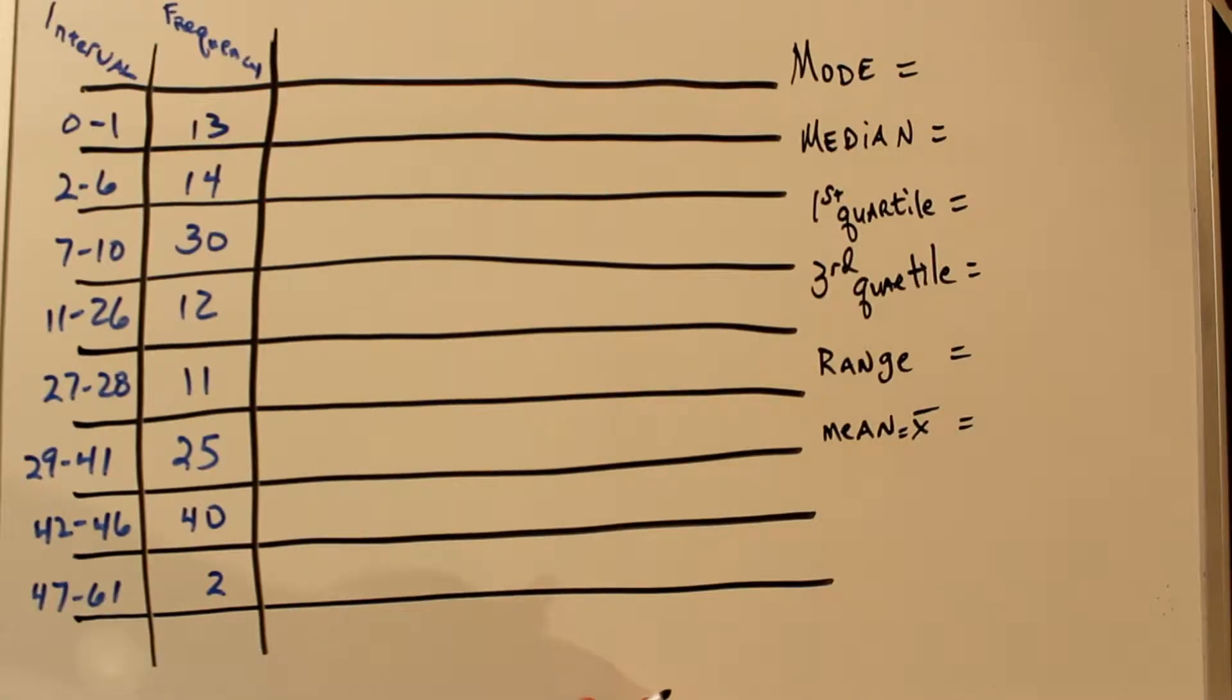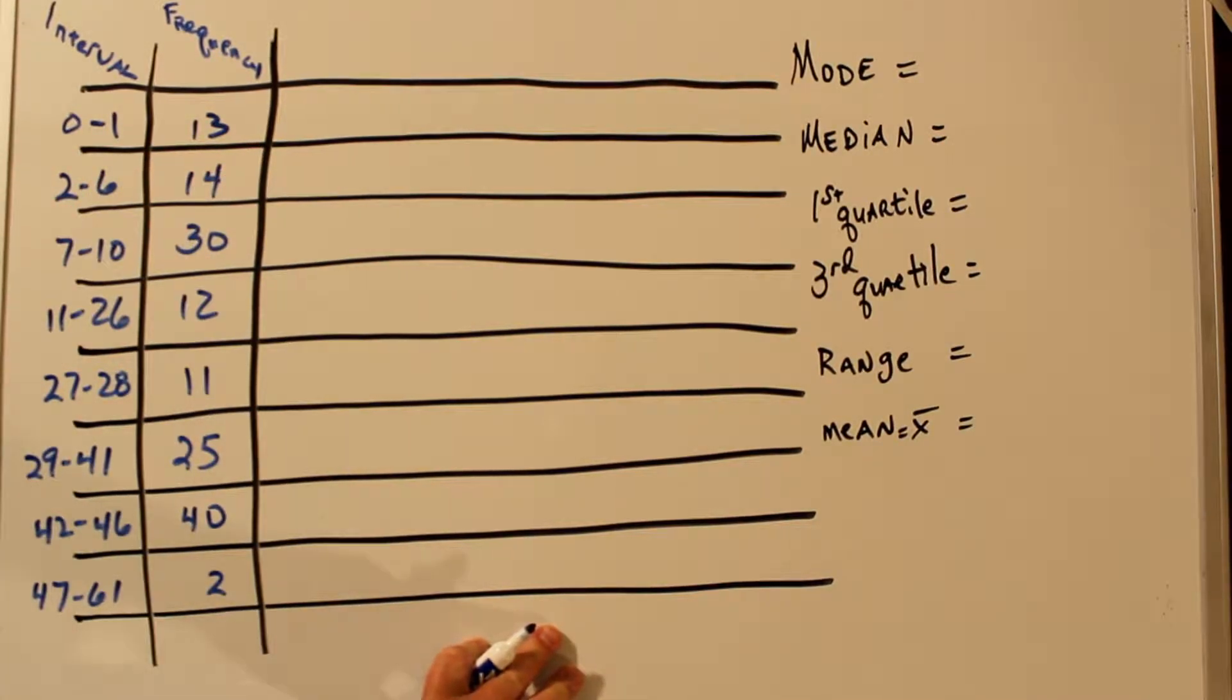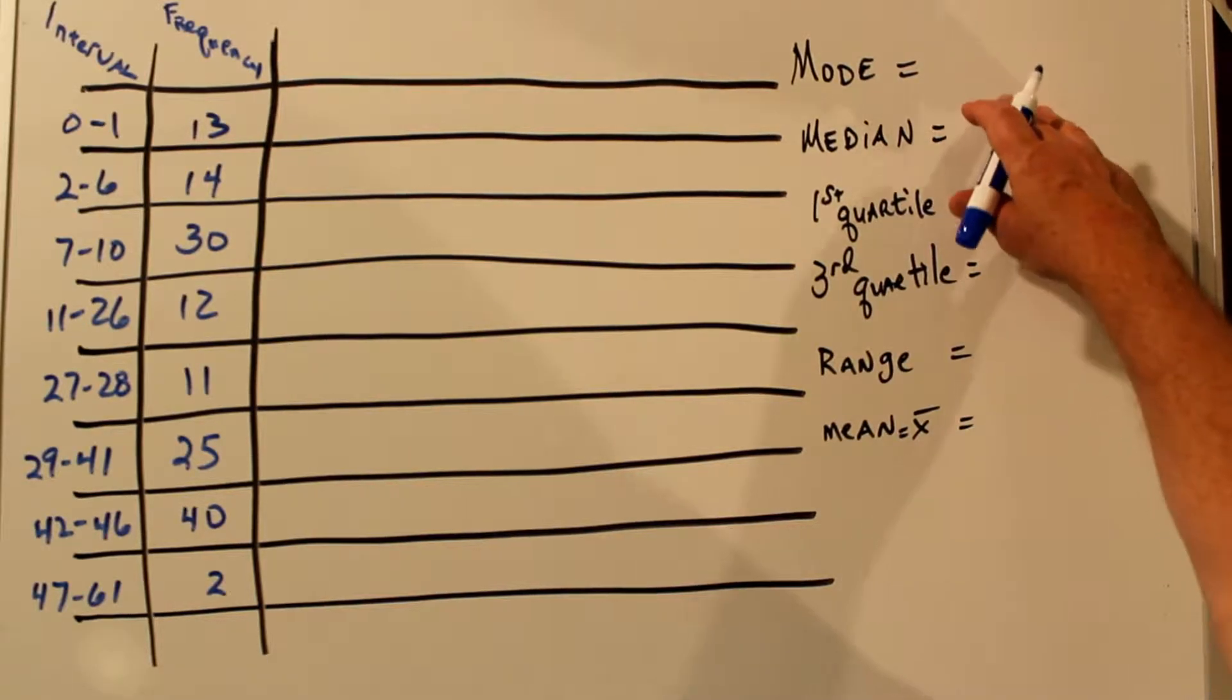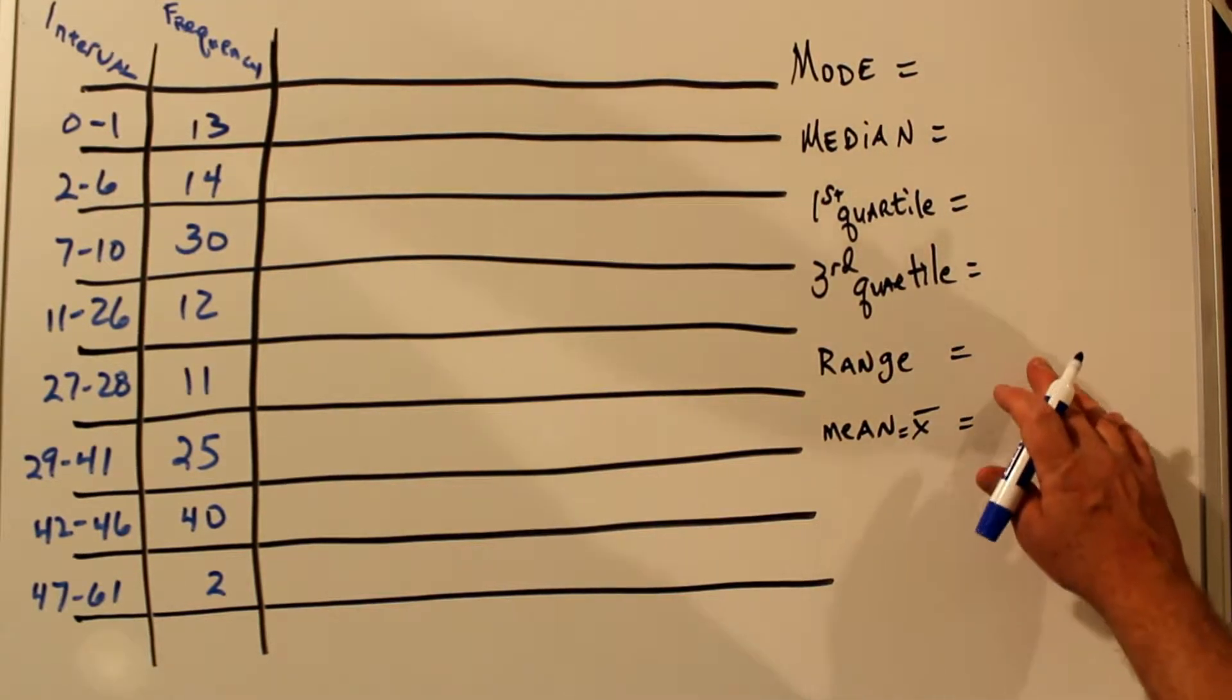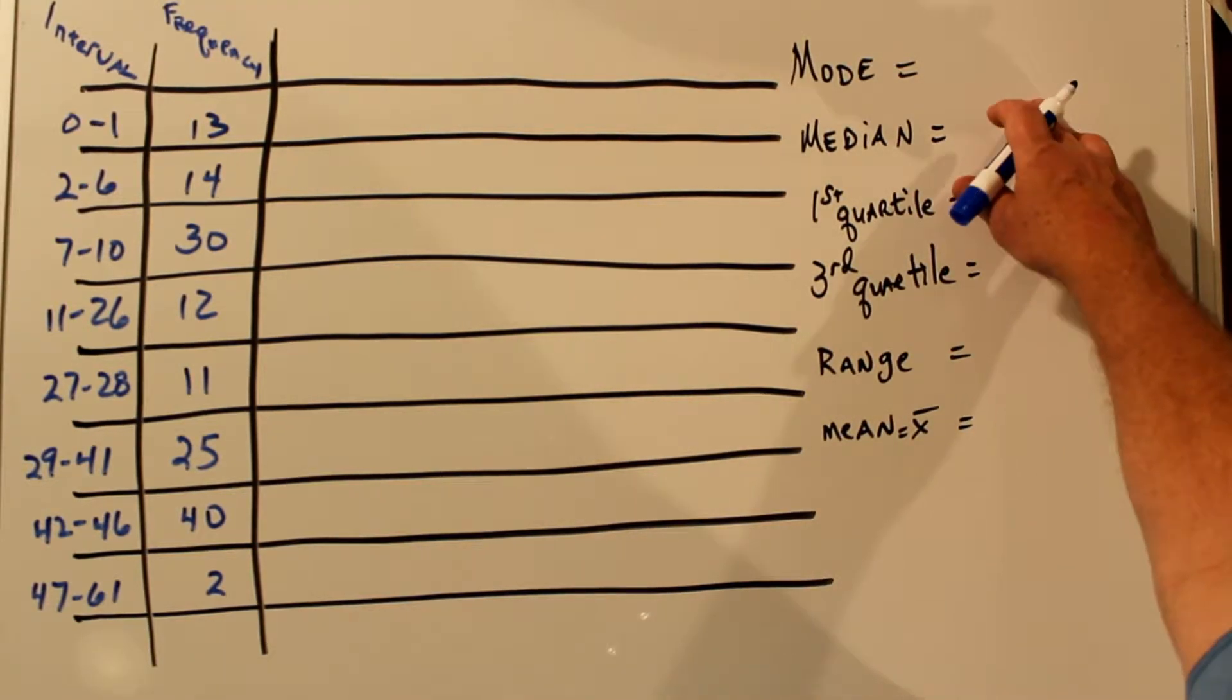Here we have a frequency distribution where we have intervals of different sizes. In other words, zero to one has two numbers in it, but 11 to 26 has 15 numbers in it. We have the number of data points in each category. What we want to find are the statistical measurements: the mode, the median, the first and third quartiles, the range, and the mean or average. So let's go through each one of these.